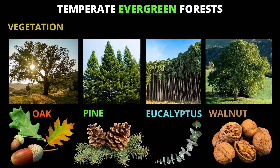Look at the temperate evergreen forests vegetation. Look at the first picture — it's a beautiful oak tree. And can you see below the picture? Can you see some nuts? That is an oak nut. The other name for an oak nut is acorn.